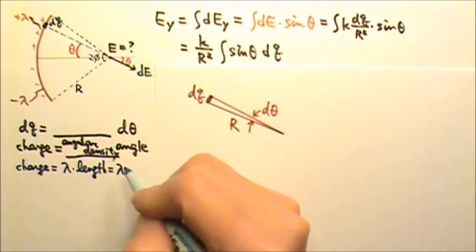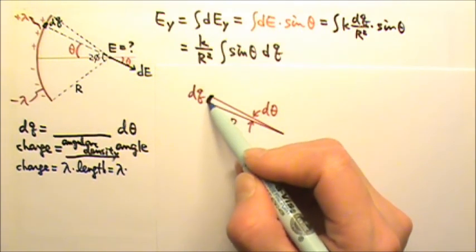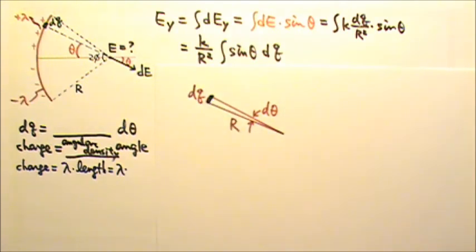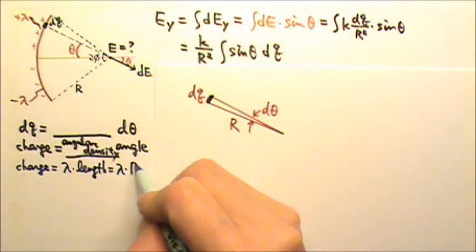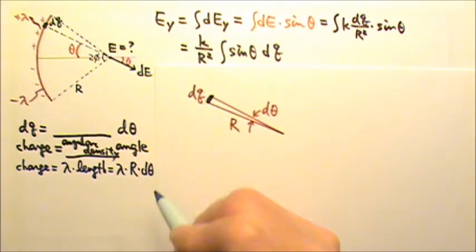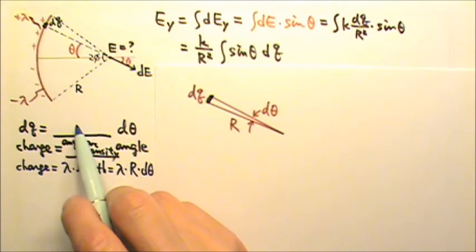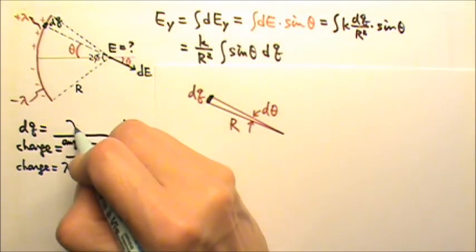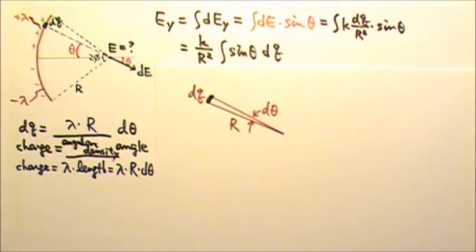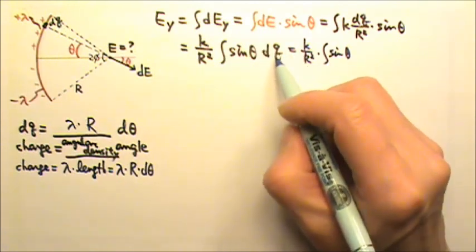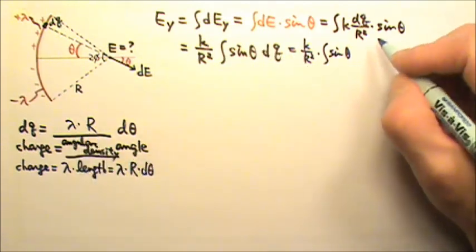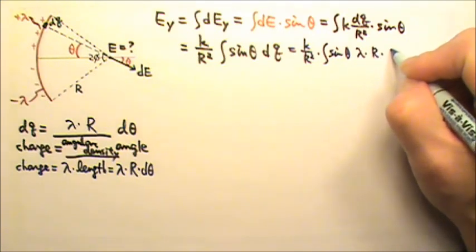And that would be the λ times the length of this arc. How do we find the length of the arc? It will be radius times the angle. So this will be r times dθ. That means what goes here is λ times r. So I can rewrite this into that, and replace dQ with λ times r dθ.